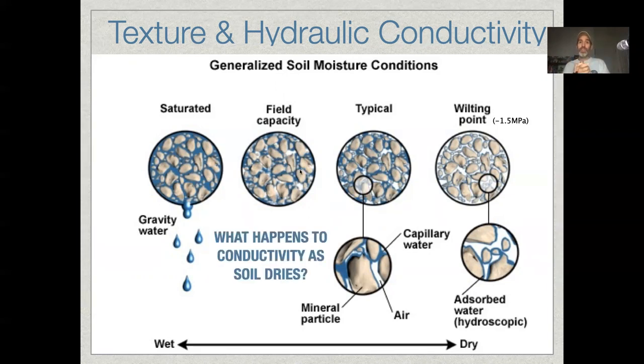So what happens to soil conductivity as the soil dries out? So if the soil is saturated on this left-hand side, you can imagine that if water wanted to flow through here, there's lots of paths for water to flow through a saturated soil. By contrast, as the soil continues to dry, and let's say you get down to this wilting point, there's not going to be much flowing going on because you really don't have many paths for moisture to move along because there's a lot of air in there.